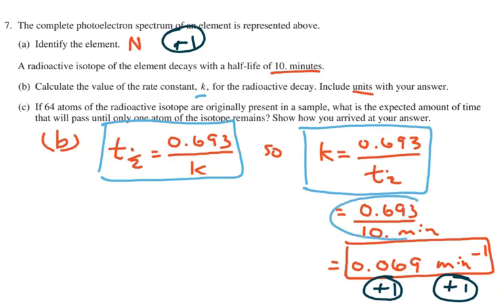The half-life is 10 minutes, so 0.693 divided by 10 will be 0.0693. Since 10 only has two significant figures, we give this answer as 0.069, and minutes are on the bottom here so it's minutes to the minus one. And we just earned two more points: one point for getting the answer 0.069 and another point for having the correct units, minutes to the minus one.